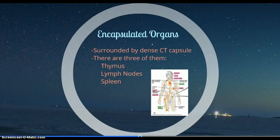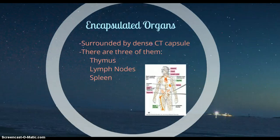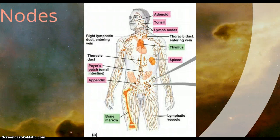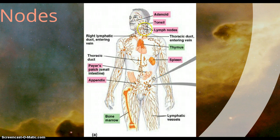So let's talk about encapsulated organs. They're surrounded by a dense connective tissue capsule, and there are three of them: your thymus, lymph nodes, and spleen. I also want to mention where the unencapsulated tissues would be. Your Peyer's patches would be right here on your small intestine. Your appendix would be right here below the cecum. And your tonsils would be up here. Then there's your thymus and spleen, which are encapsulated organs. And as you can see, there are many diffuse bean-shaped, oval-shaped things called lymph nodes, and we'll be talking about those next.